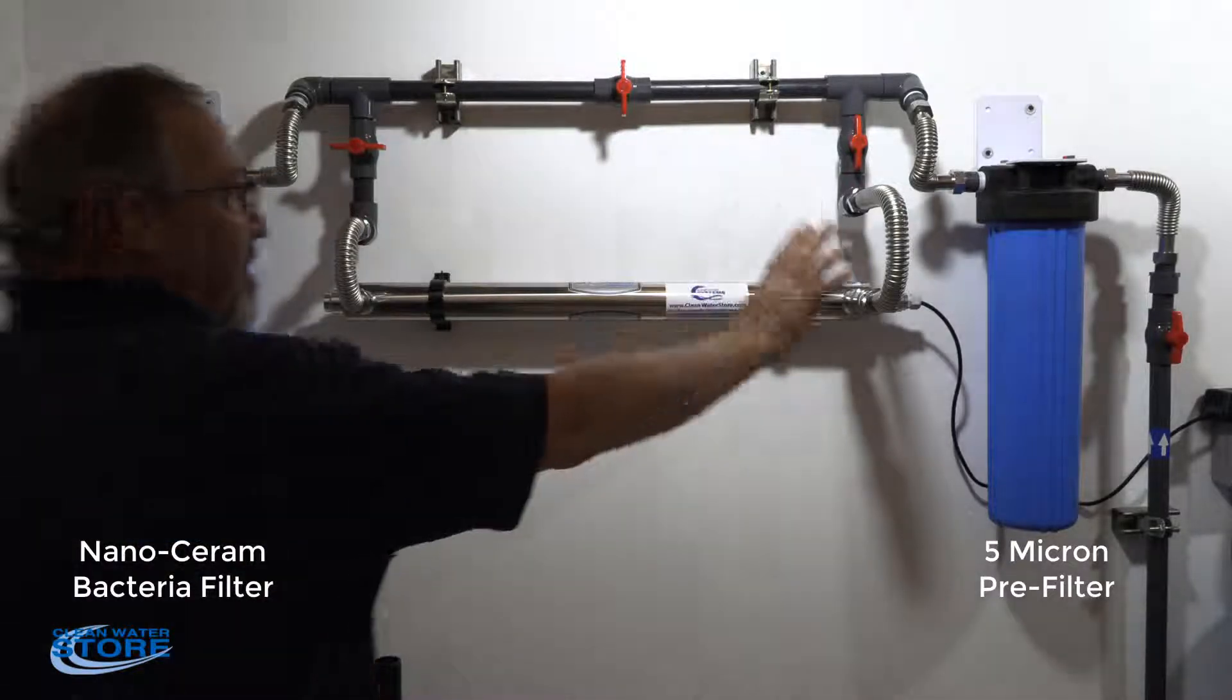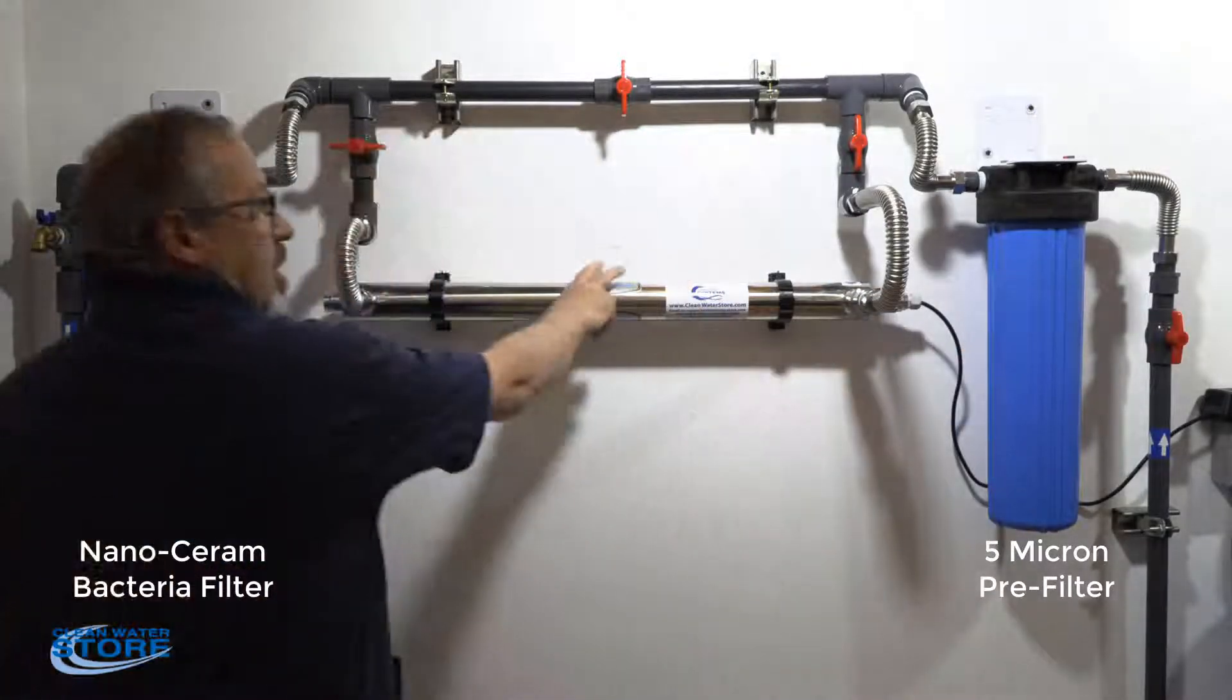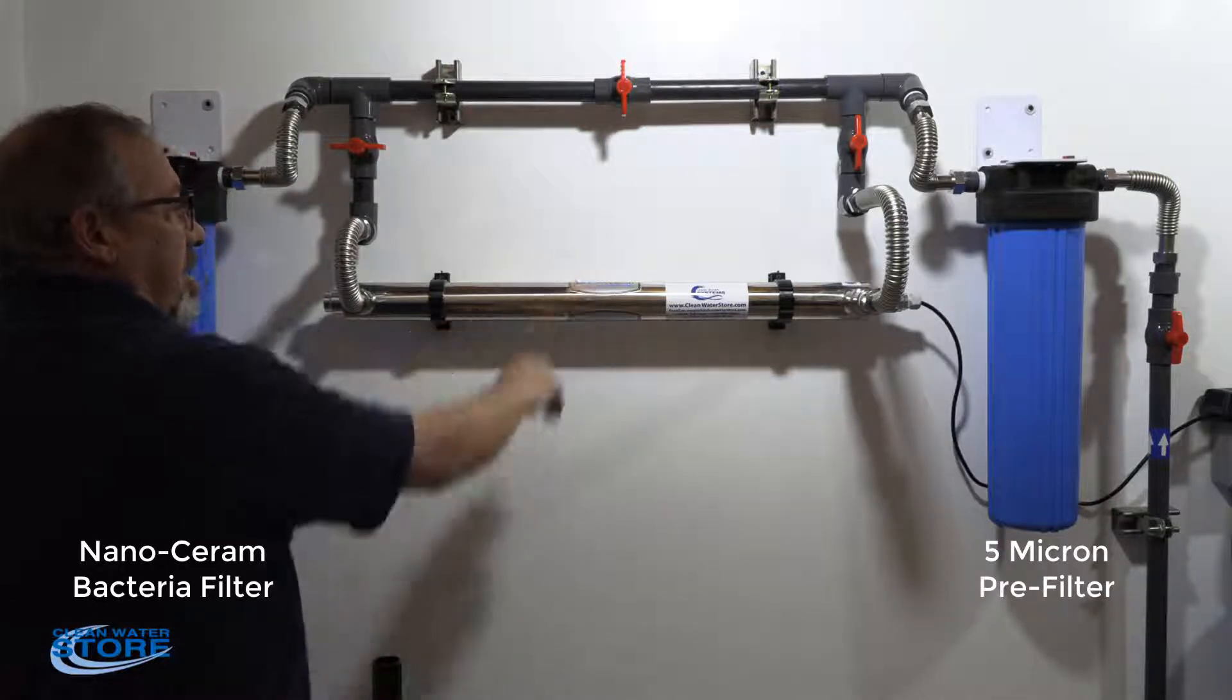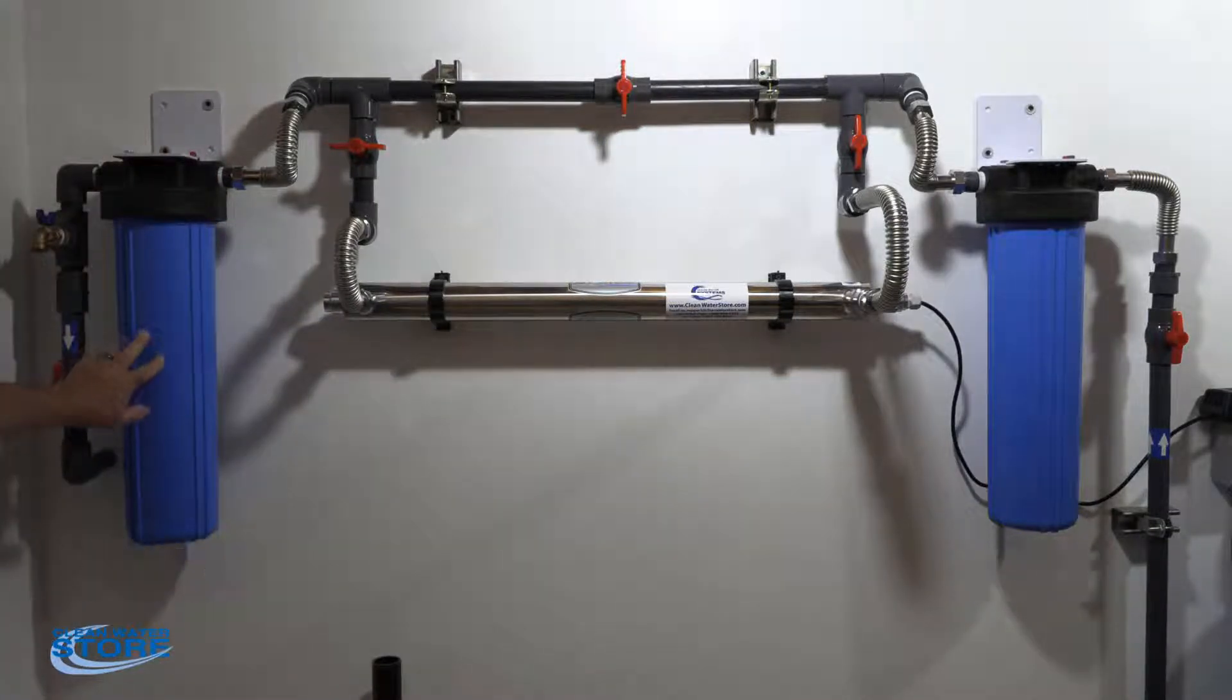Basically, we have a 5-micron inlet filter. The water flows through your UV to kill your bacteria, and then we have a bacteria filter.